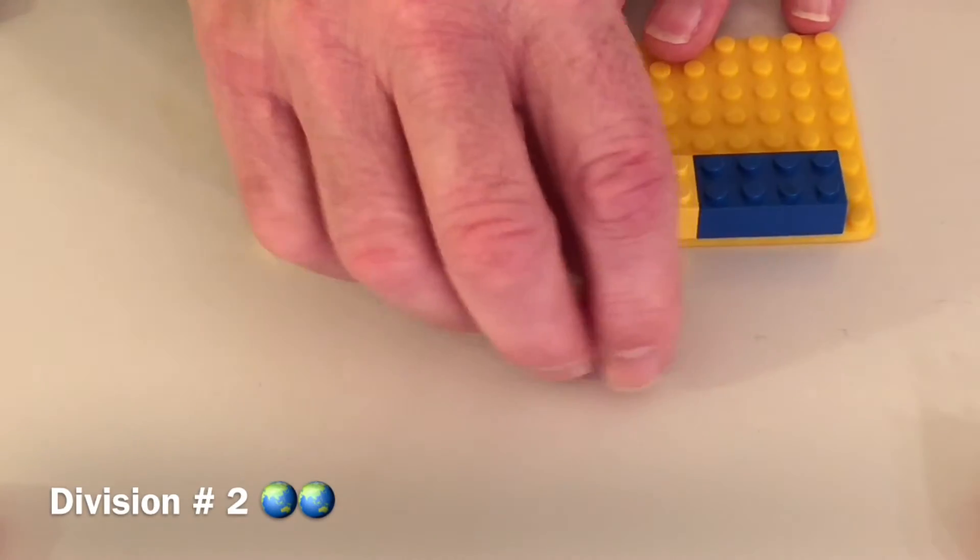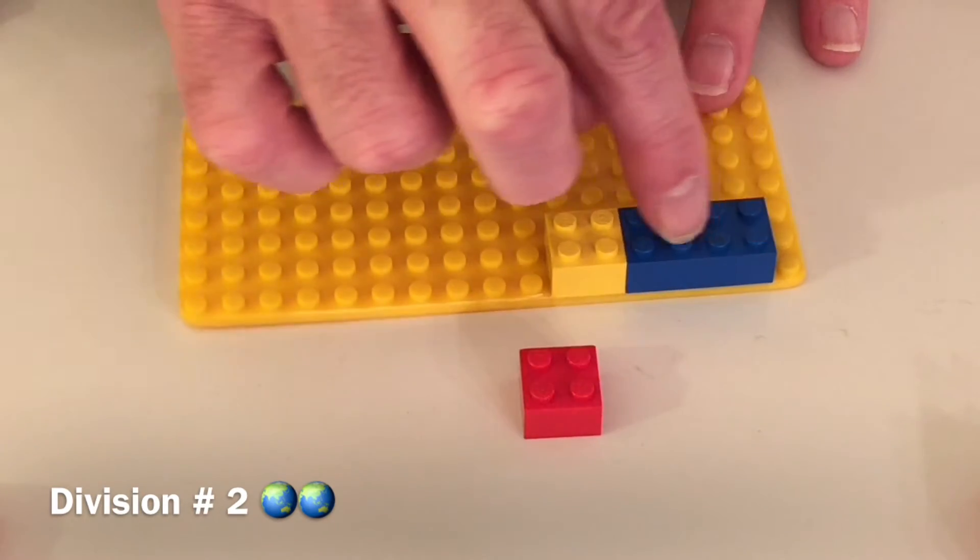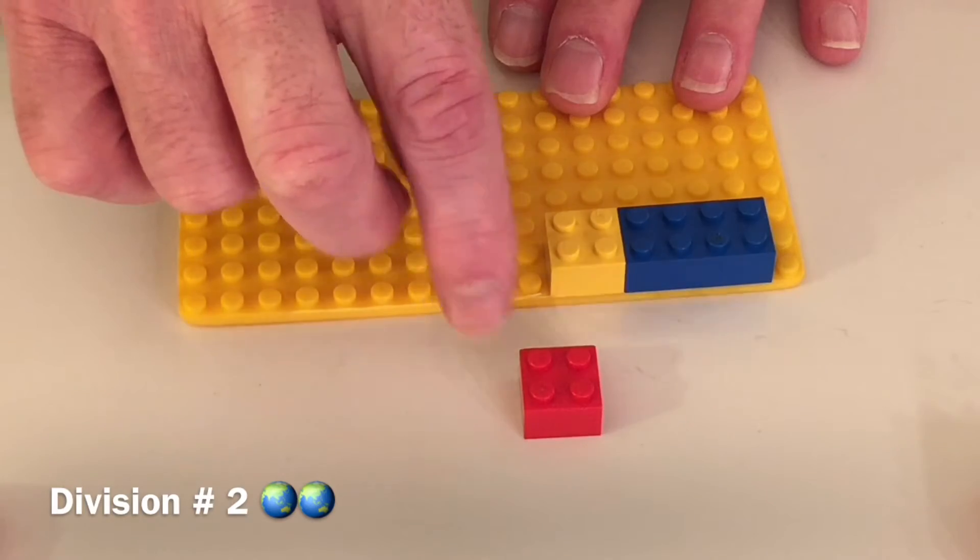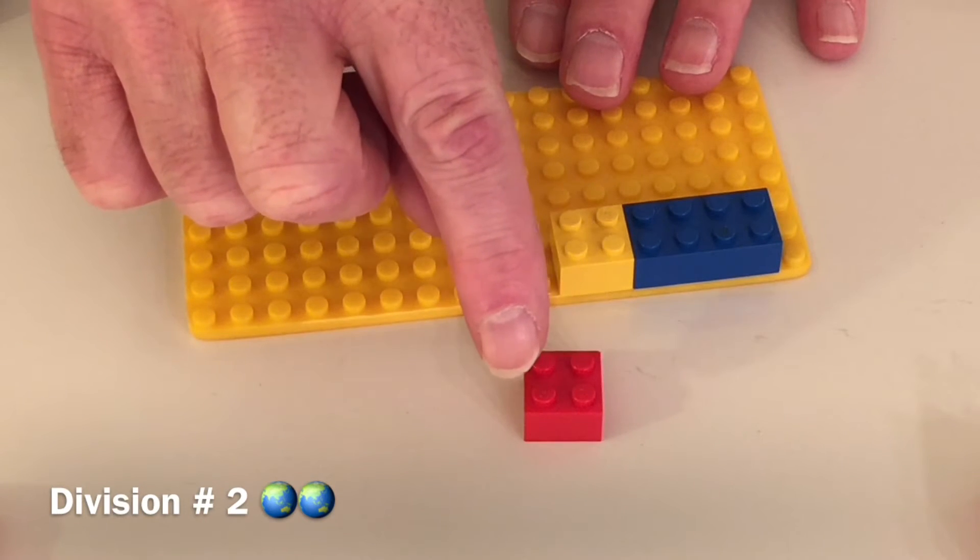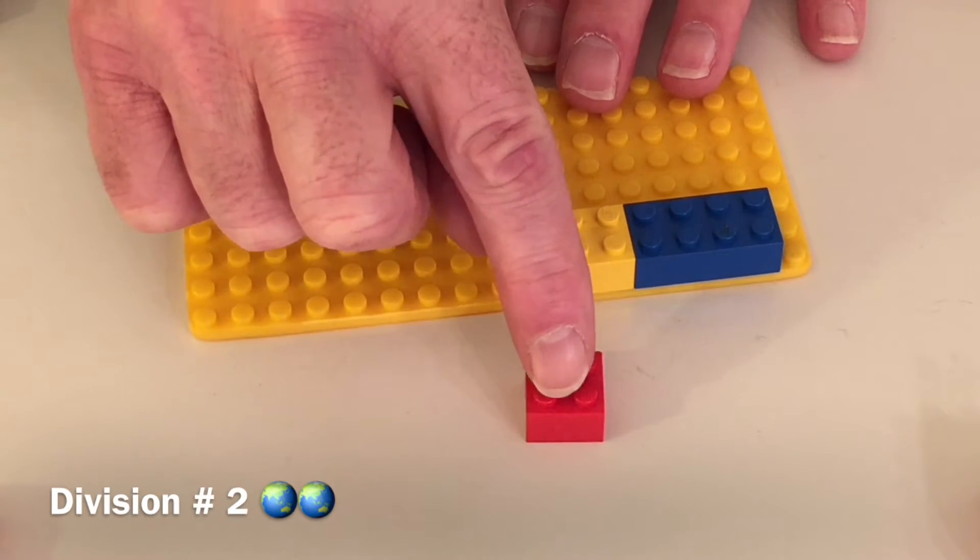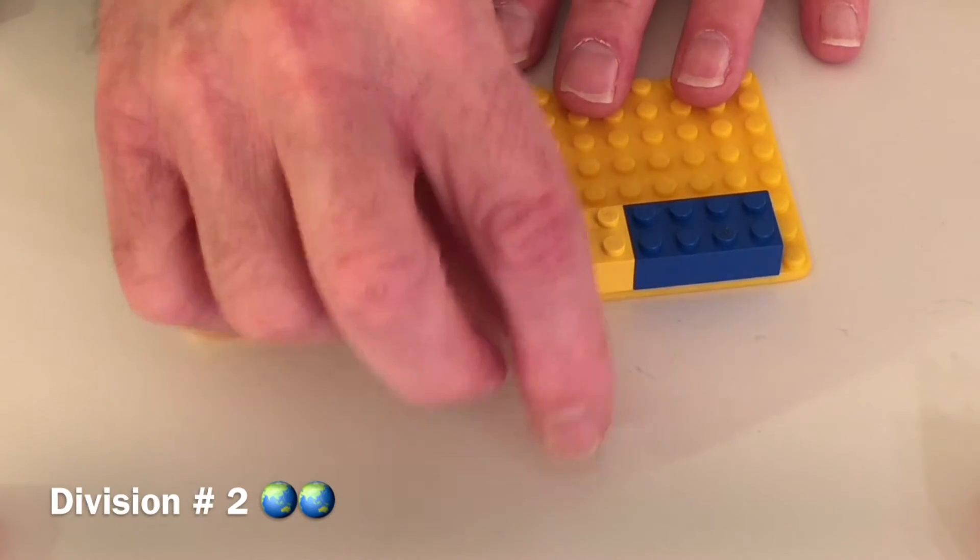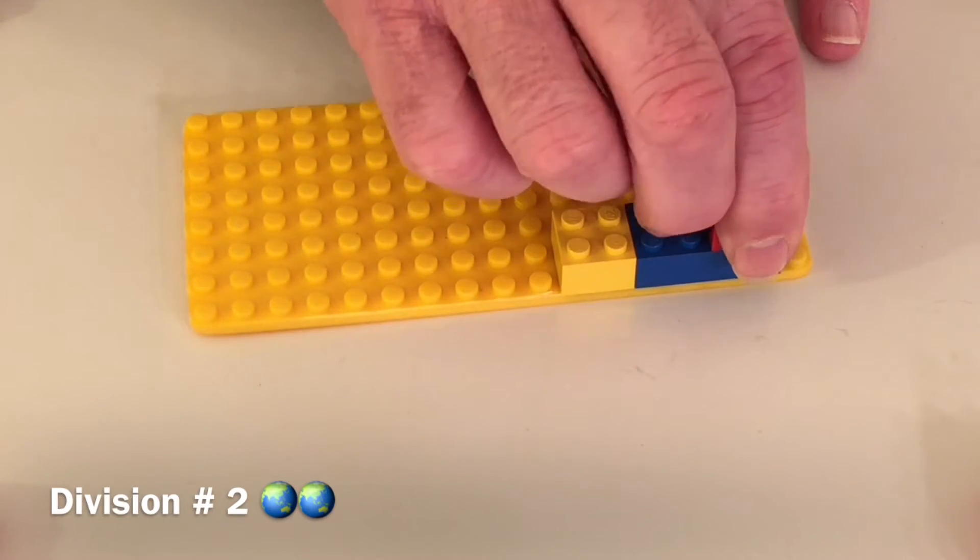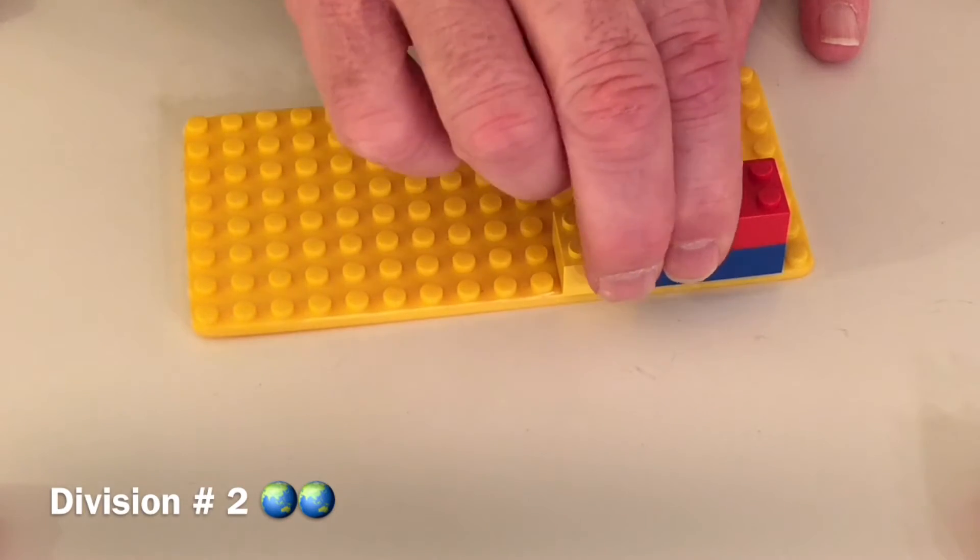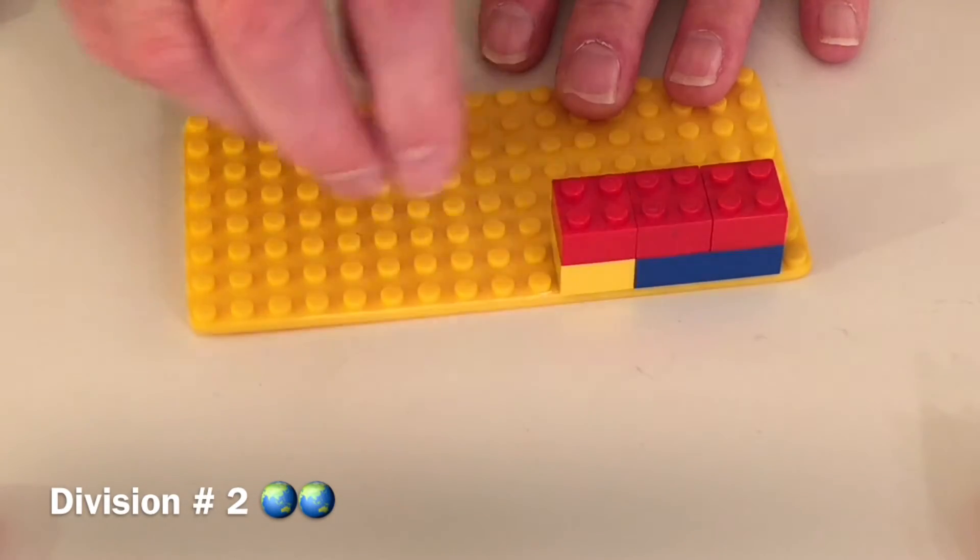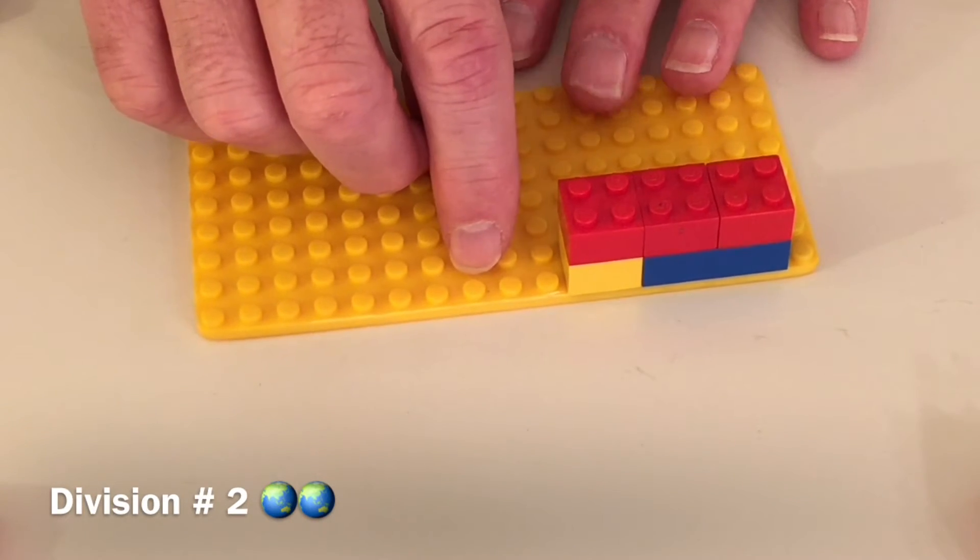How many 4-dot blocks, 1, 2, 3, 4, does it take to make 12? Well, how many do you think it will take? Will it take 6? No, that's too many. Will it take 2? I don't know. Let's just try. So we'll put this one down. There's 1 4-dot block, 2, 3. There are 3 fours in 12. Good job.